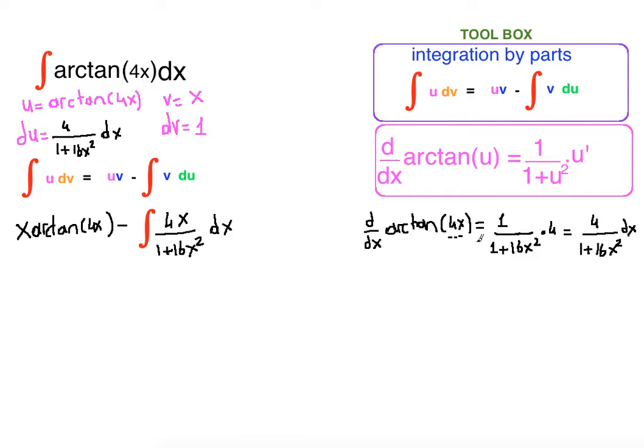After this point, we are going to do normal substitution for this part of the integral. Let's use w. Let w be 1 plus 16x squared. So what is dw? The derivative of 1 is 0 plus the derivative of 16x squared is 32x dx. So if you solve for dx, your dx will be dw over 32x.